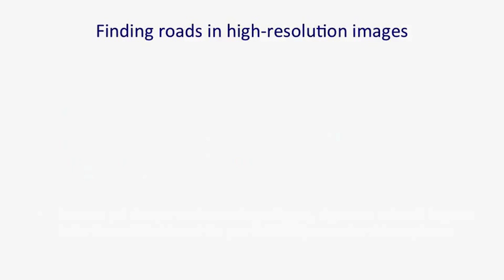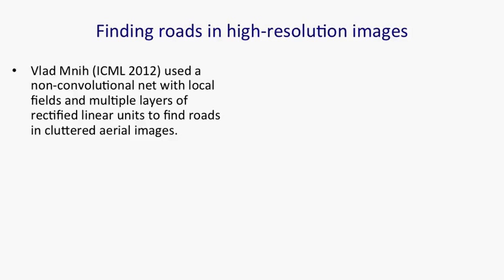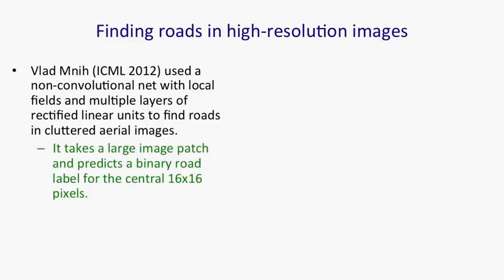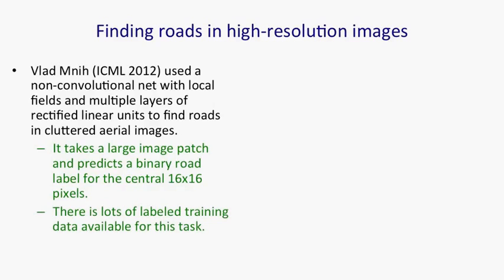There are other application domains where we've learned the same lesson. Vladimir Mnih used a net with local fields but without convolution to extract roads from aerial images — cluttered aerial images of urban scenes. He uses multiple layers of rectified linear units, takes a relatively large image patch, and predicts for the central 16 by 16 pixels whether each is a piece of road or not. There's a lot of labelled training data available because maps tell you where centre lines of roads are, and roads are roughly fixed width.